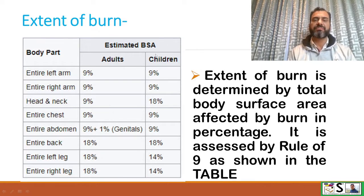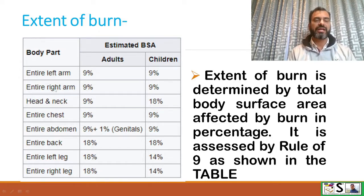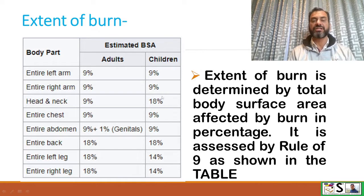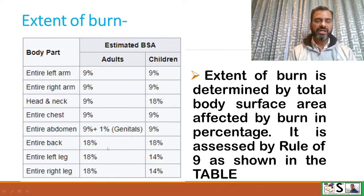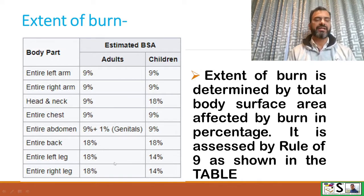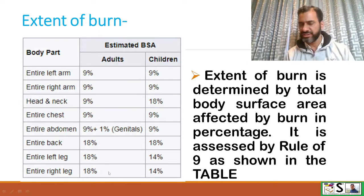As per the rule of 9, the estimated burn surface area is as follows: entire left arm is 9% (same in children), right arm 9% (same in children), head and neck 9% (but in children it is estimated at 18%), chest 9% in adults and children, abdomen 9%, genitalia 1%. Entire left leg is 18% for adults and 14% for children, and right leg 18% for adults and 14% for children. In this way we find out the total burn surface area.